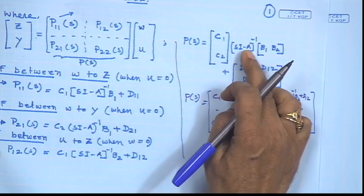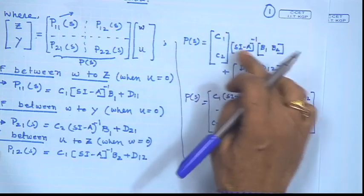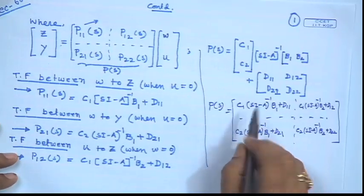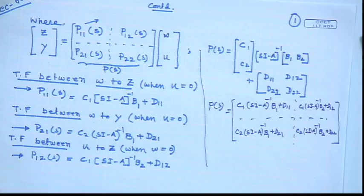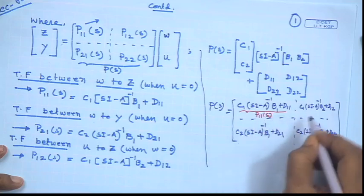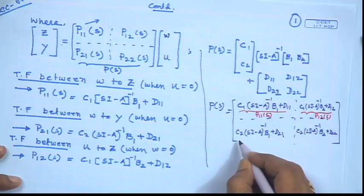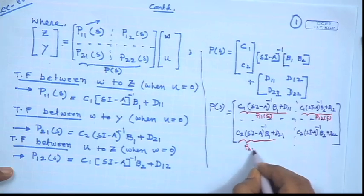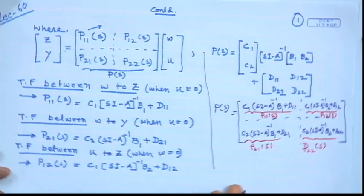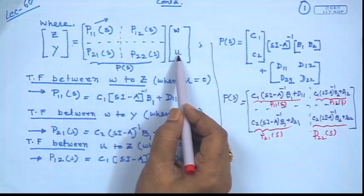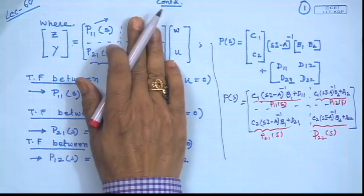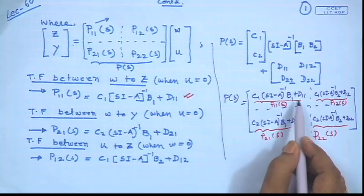These four blocks correspond to: inputs w (exogenous) and u (control), and outputs z (regulated) and y (measured). If you expand this expression into matrix form, you get: P11(s) = C1(sI−A)⁻¹B1 + D11, P12(s) = C1(sI−A)⁻¹B2 + D12, P21(s) = C2(sI−A)⁻¹B1 + D21, and P22(s) = C2(sI−A)⁻¹B2 + D22.